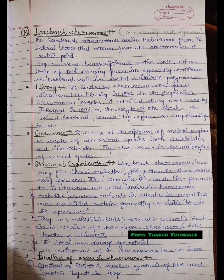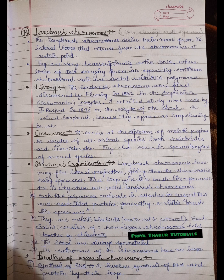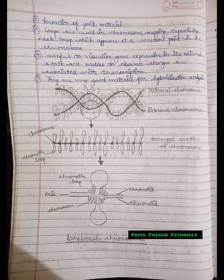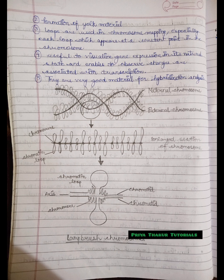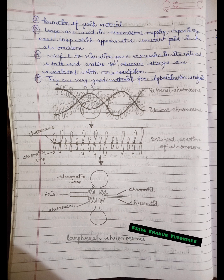The functions of lampbrush chromosomes are: first, synthesis of RNA and protein by their loops; second, formation of yolk material; third, the loops are used in chromosome mapping, especially since each loop appears at a constant point in the chromosome. They are also useful for visualizing gene expression in its natural state and observing changes associated with transcription. They are very good material for hybridization analysis.